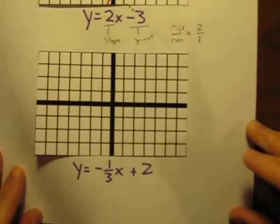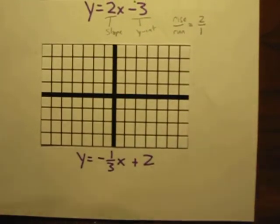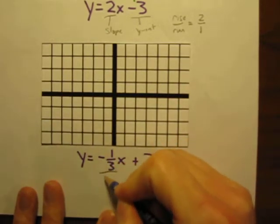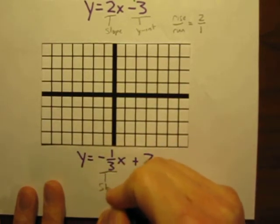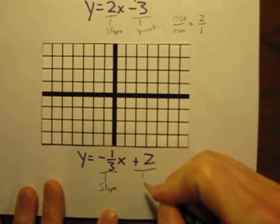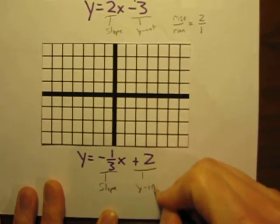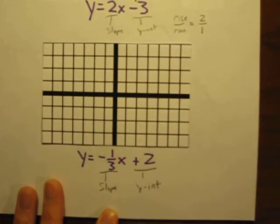Let's try the second example. This time, the equation is y is equal to negative 1 third x plus 2. What do we do? Let's first identify our negative 1 third as being our slope. Positive 2 is our y-intercept. And now we're ready to start graphing.